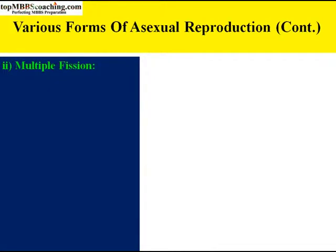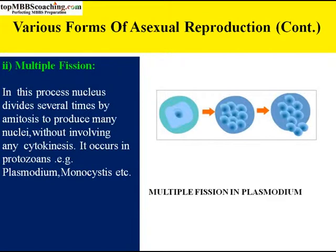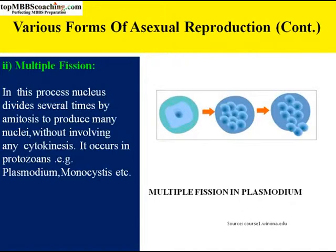Multiple fission — as the name denotes, many fissions or many breakages. In this process, the nucleus divides several times by amitosis to produce many nuclei without any cytokinesis. No cytoplasmic division happens. It occurs in protozoans like Plasmodium, Monocystis, etc. The nucleus of the parent divides into many daughter nuclei by repeated division. This is followed by division of cytoplasm into several parts, each enclosing one nucleus. A number of daughter cells are formed from a single parent at the same time — this is multiple fission.